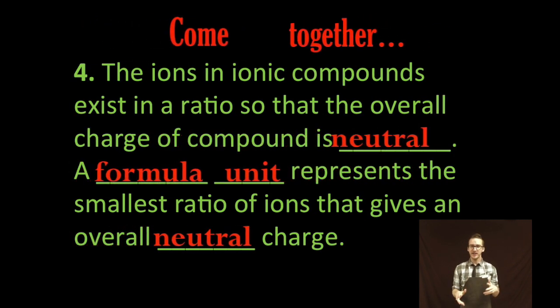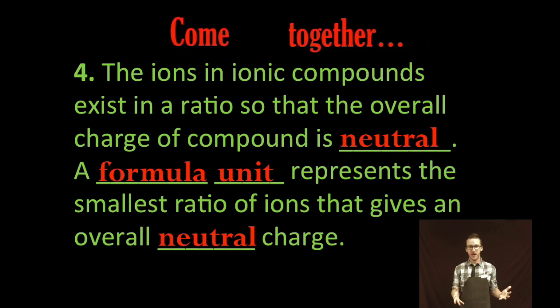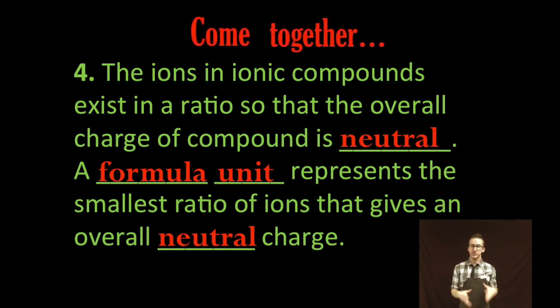Now super important to recognize that the ions in ionic compounds exist in a ratio so that the overall charge of a compound is neutral. And for ionic compounds we say that a formula unit represents the smallest ratio of ions that give us an overall neutral charge.